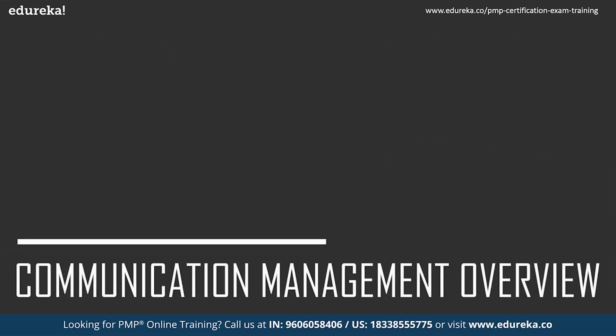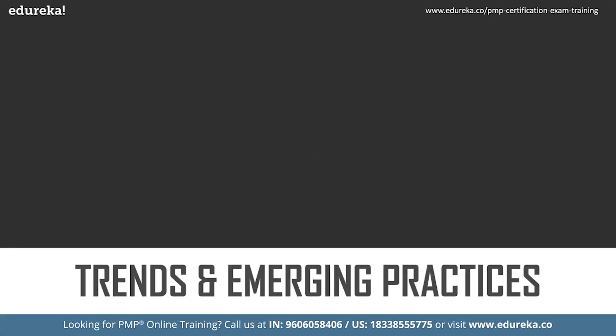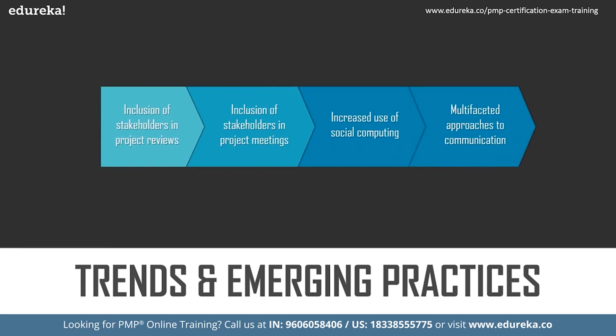Communication management overview: when we say communication, there are a lot of ways communications are done — verbal communication and written communication. Within these two, you can also think about formal verbal, formal written, informal verbal, and informal written. So these four types or combinations of communication need to be very clearly articulated.